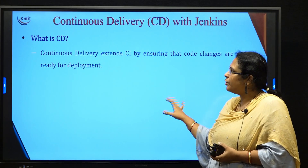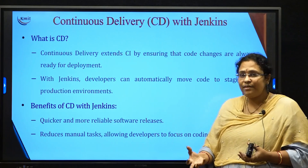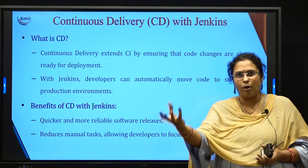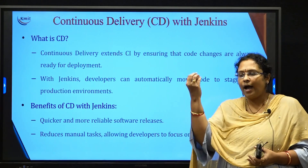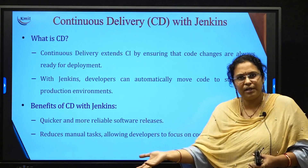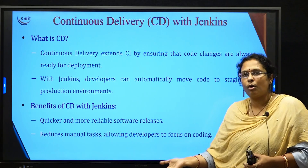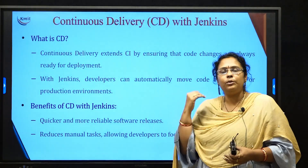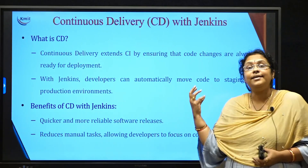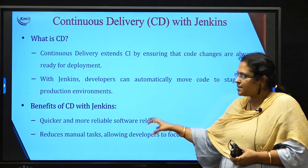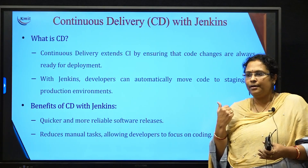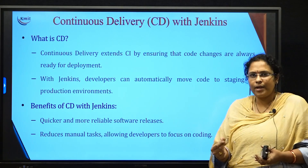Now let us talk about continuous delivery. Continuous delivery means when your continuous integration is building and testing your project, the output file can be deployed directly to whichever environment you want — whether it is the cloud or a Tomcat server — it will deploy to that production server automatically. The advantage of continuous delivery is you can quickly have releases, and whenever there is any problem, you can easily identify it.